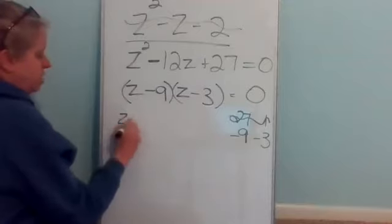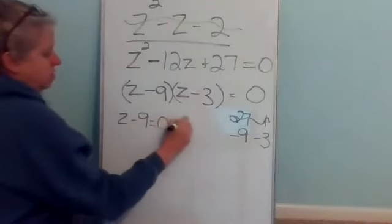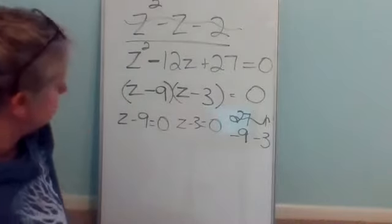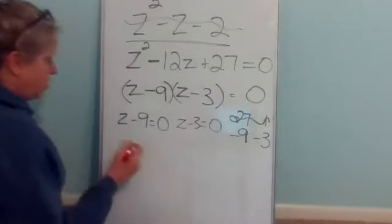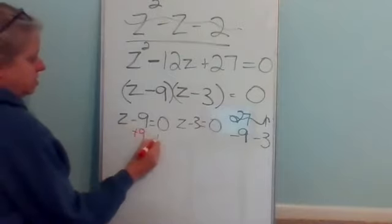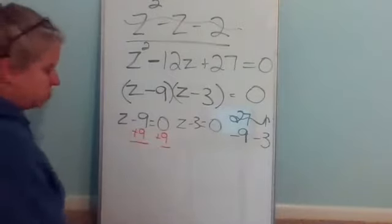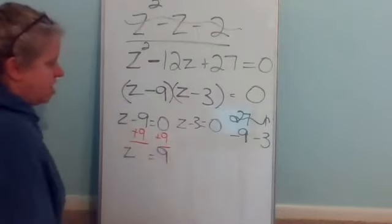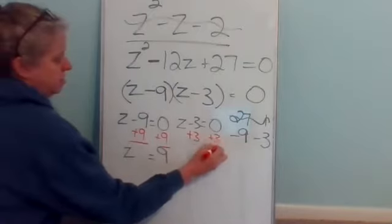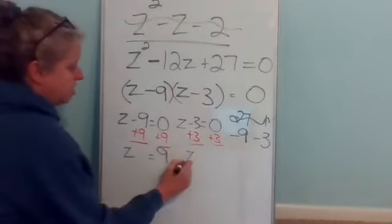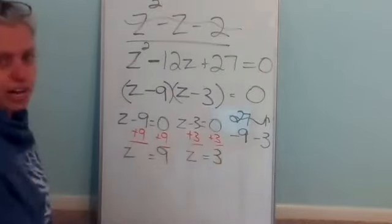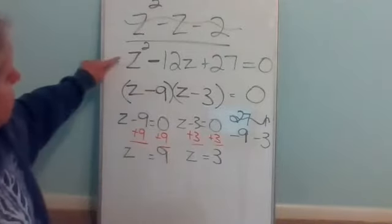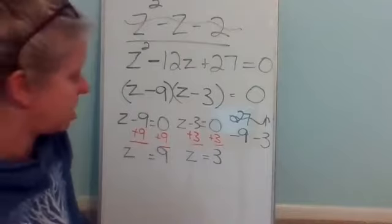Set the factors equal to zero and solve for Z. Add nine to get Z equals nine; add three to get Z equals three. So nine and three are the values that would make this rational expression undefined.